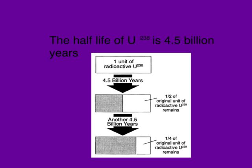The half-life of uranium-238 is 4.5 billion years. So that means that if we had one unit of radioactive uranium-238, after 4.5 billion years, only half of that would still be radioactive. And then, after another 4.5 billion years, only one quarter of that would still be radioactive — three quarters of it would have decayed.